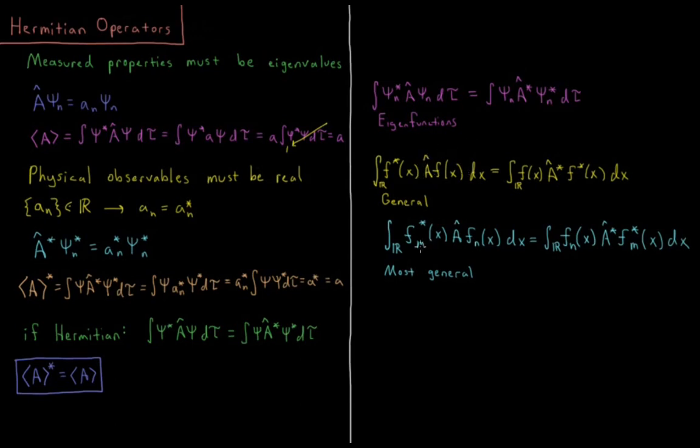And we can even do this with two different functions in the most general form of this equality. The integral of f m star of x times A acting on f n of x is equal to the integral of f n of x times A star acting on f m star of x. So even if f m and f n are different functions, this is still true and is an appropriate definition of what makes an operator Hermitian such that the expectation values are real, their complex conjugates equal each other, and they get real results which give us measurable properties, physical observables, which do not have imaginary components.